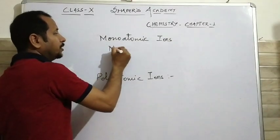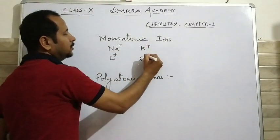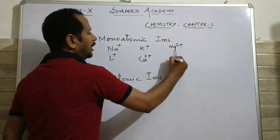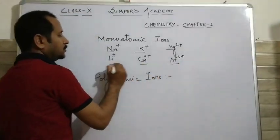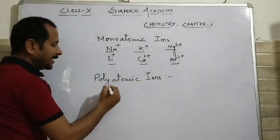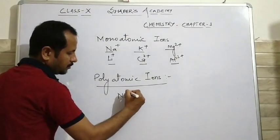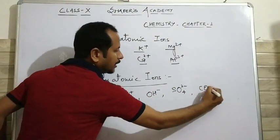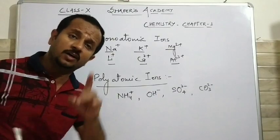Monoatomic ions — like sodium, lithium, potassium, calcium, magnesium, aluminium, etc. — are monoatomic ions because they all contain only one atom in them. Second are polyatomic ions like ammonium, hydroxide ion, sulfate ion, carbonate ion. They all are called polyatomic ions because they contain more than one atom in them.